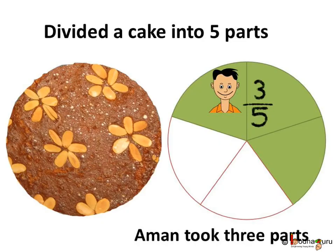Aman got a cake. He divided the cake into five parts. First, he took three pieces, that is, three by five parts.